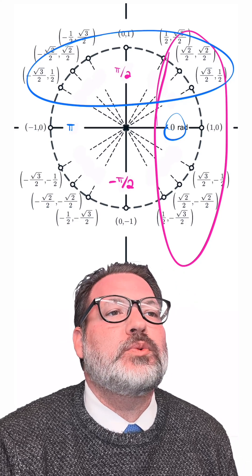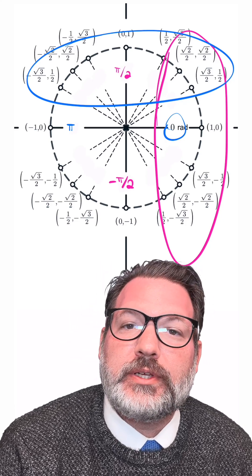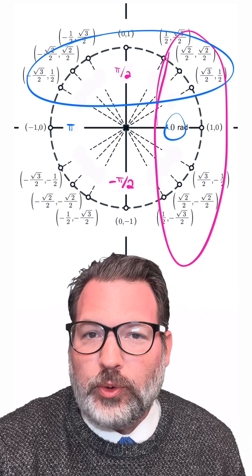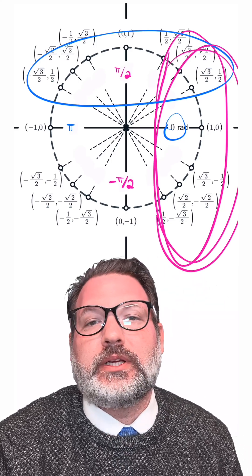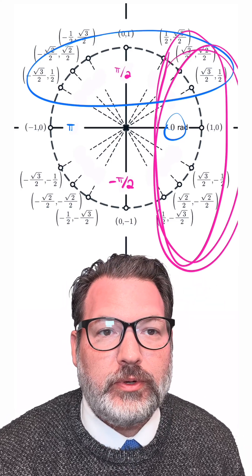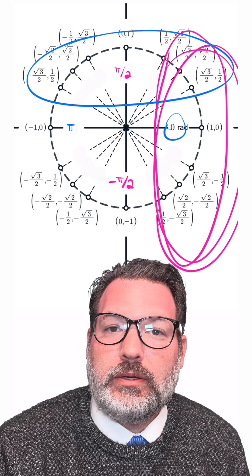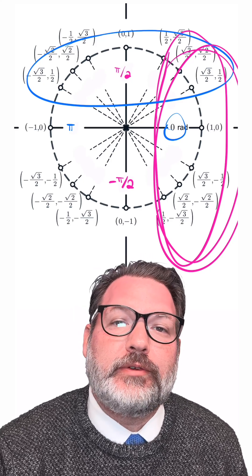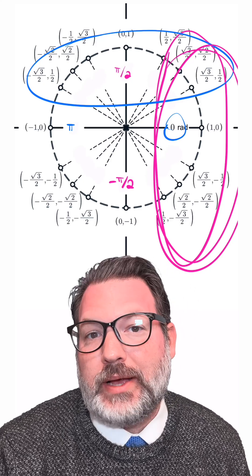For arc tan, we need a place where the ratio between sine and cosine would be unique. And although there are multiple ways to do it, that turns out to be the same thing as restricting ourselves to negative pi over 2 to pi over 2 for arc sine. So arc tan also returns values between negative pi over 2 and positive pi over 2.